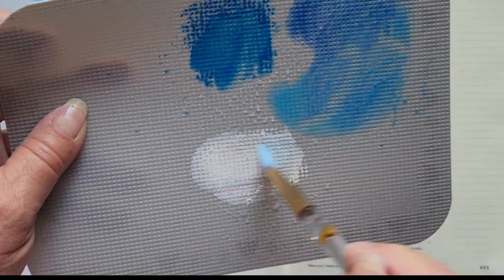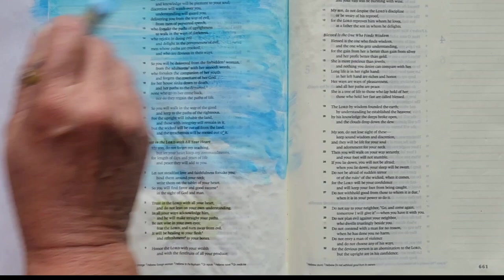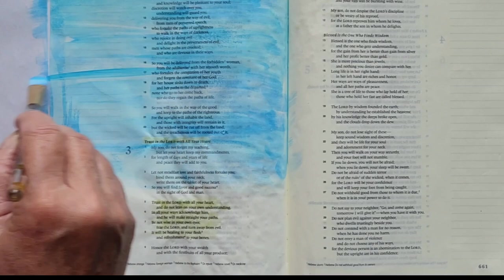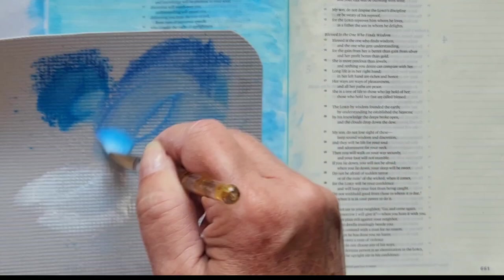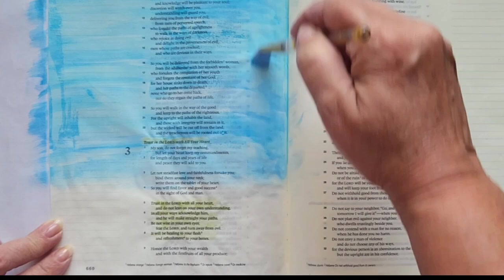I'll rinse off my brush again in some water, come in, pick up the white, use the white to soften my color. I can still see my words. I can even mix just to get a little bit of difference going. But there, that looks good. I'm going to dry this and I'll be right back.